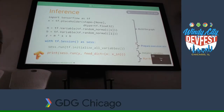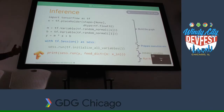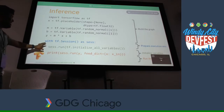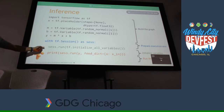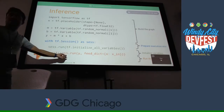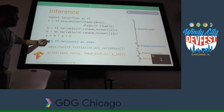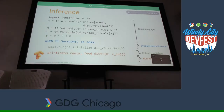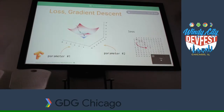What you need to do is create a session to run that graph. This session can be on your own machine, or it can be distributed across different machines — even clusters of different machines. After that, we initialize the variables, and then we run it. Session.run takes a session and runs the graph that we created.